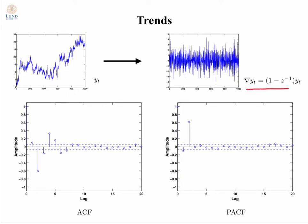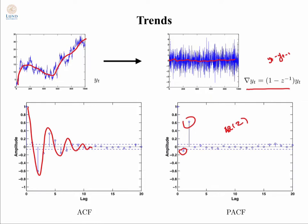Let me begin by differentiating the model. I form a new process nabla Y, which is just y(t) − y(t−1). As you can see, the big trend in the data is now gone and we have a zero-mean process. Looking at the ACF and PACF of the differentiated series, I have a ringing behavior in the ACF — typical of MA structure — while the PACF shows a clear component and a smaller one, suggesting an AR(2). So I should model the W process as an AR(2), meaning this is an ARIMA(2,1,0).